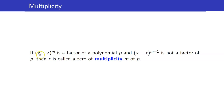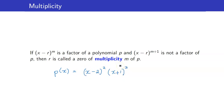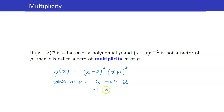Now, suppose that (x minus r) raised to m is a factor of a polynomial p, and if you increase the exponent by one, it is no longer a factor of p. Then we say that r is a zero of multiplicity m of p. Suppose that p(x) can be written as the square of (x minus 2) times the cube of (x plus 1). We know that the zeros of p are 2 with multiplicity 2, and negative 1 is a zero with multiplicity equal to 3. The multiplicities of the zeros are just the exponents appearing in the factorization.